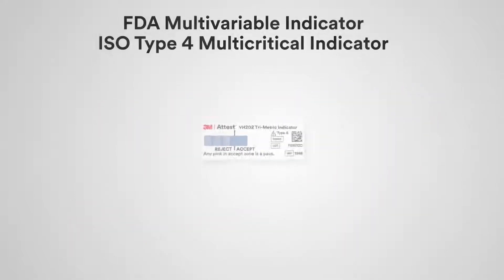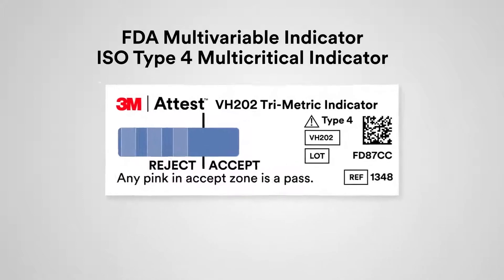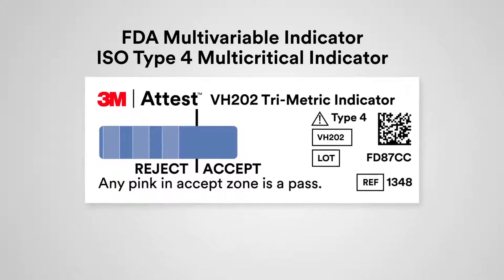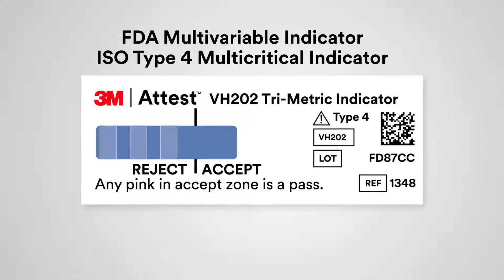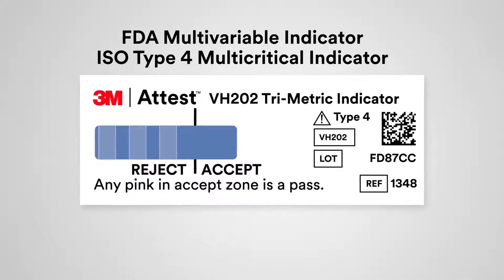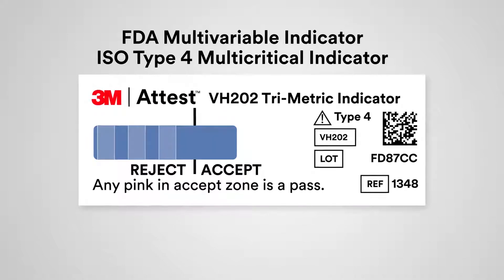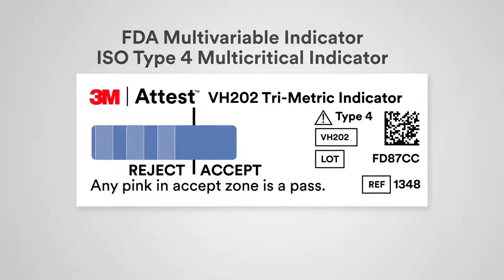The FDA created a new category of chemical indicators — Multivariable for Chemical Sterilization — for the 3M A-Test Trimetric CI. The 3M A-Test Trimetric is the only chemical indicator to meet both the new FDA Multivariable Indicator category for Chemical Sterilization and ISO Type 4.